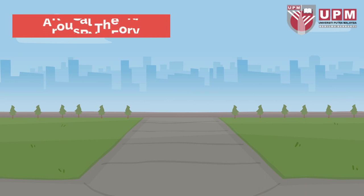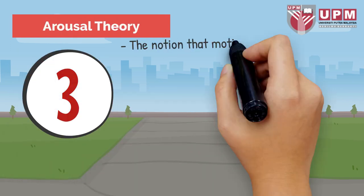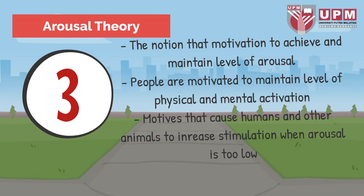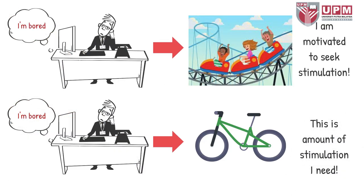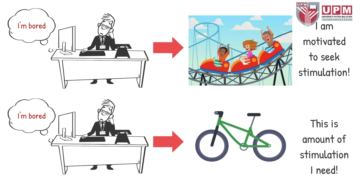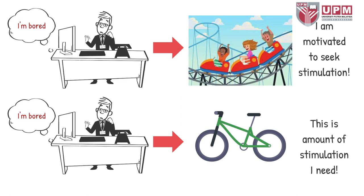Next is arousal theory — the notion that we are motivated to achieve an optimal level of arousal. People are motivated to maintain a level of physical and mental arousal, and seek to increase stimulation when arousal is too low. People have slightly different optimal levels of arousal. For some people, the optimal level of excitement might be going for a bike ride; for others, it might be a roller coaster.